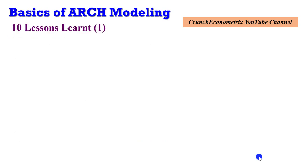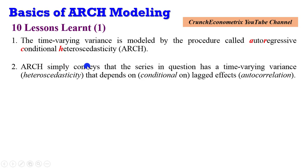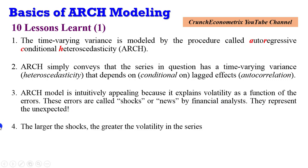To summarize lessons learned: the time-varying variance is modeled by the procedure called autoregressive conditional heteroskedasticity. The ARCH model conveys that the series in question has a time-varying variance — that is, it is heteroskedastic and conditional on lagged effects, that is, autocorrelation. The ARCH model is intuitively appealing because it explains volatility as a function of the errors. These errors are called shocks or news by financial analysts — they represent the unexpected, the unpredictable. The larger the shocks, the greater the volatility in the series.